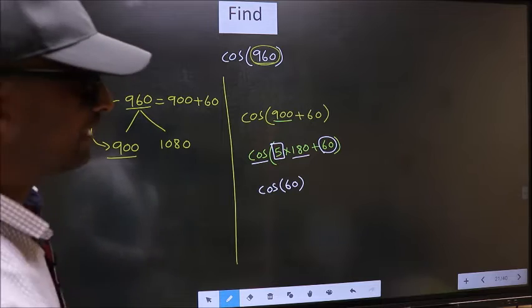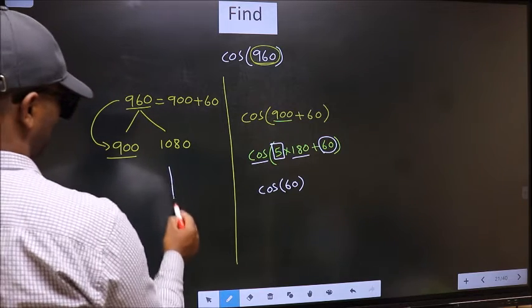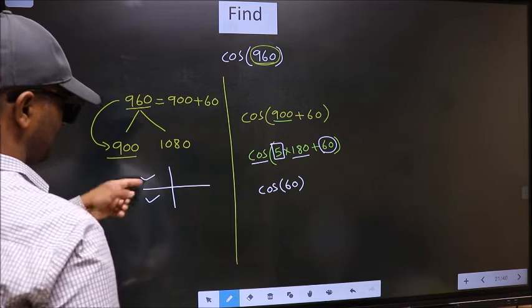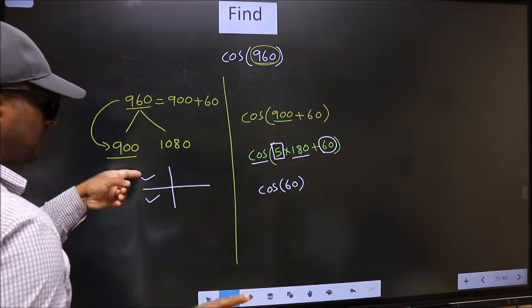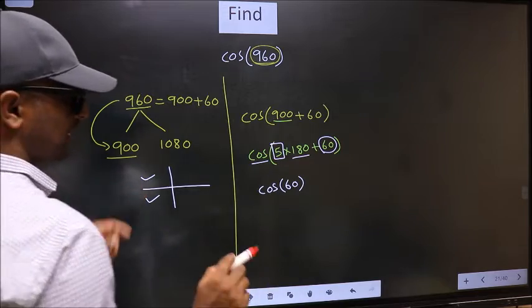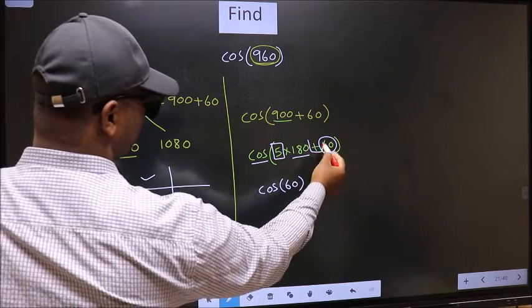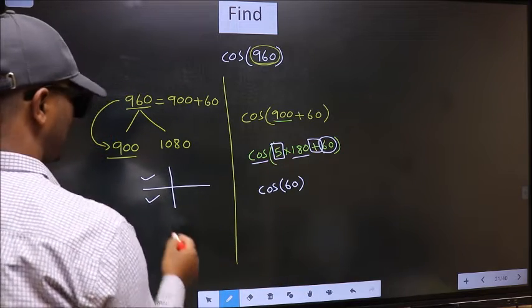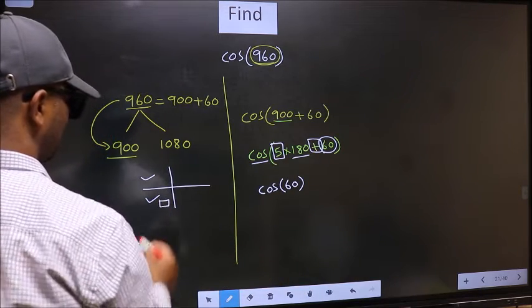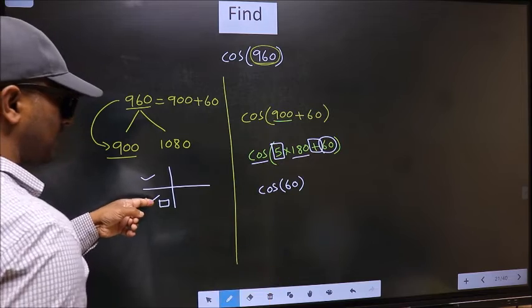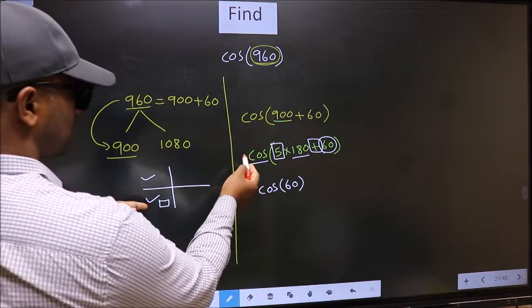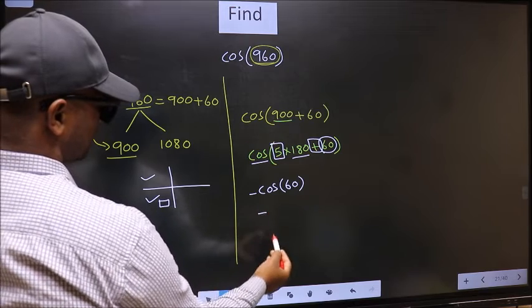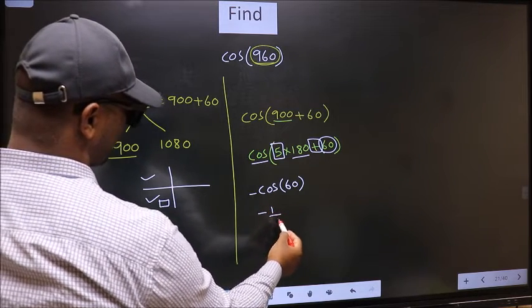So now to select the quadrant, we should look at this symbol. Here we have plus. That means the angle lies in the third quadrant. And in the third quadrant, cos is negative. So we should put negative. So negative cos 60 is 1 by 2. This is our answer.